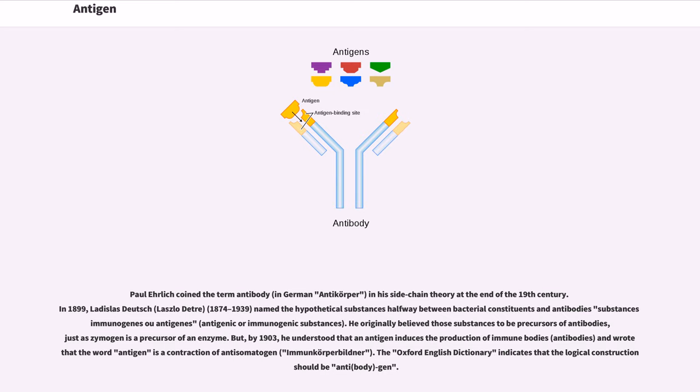But by 1903, he understood that an antigen induces the production of immune bodies, antibodies, and wrote that the word antigen is a contraction of antisomatogen, immune-körperbildener. The Oxford English Dictionary indicates that the logical construction should be antibody gen.